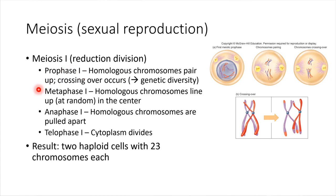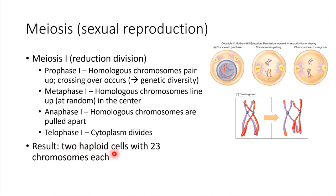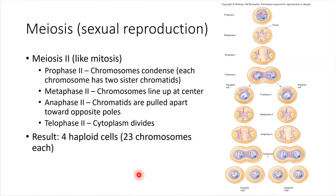Next we go through metaphase one, where homologous chromosomes line up at the center. In anaphase one, those homologous chromosomes are pulled apart. In telophase one, the cytoplasm divides — similar in overall concept to mitosis. The end result of meiosis one is a reduction division: the cells are now haploid, having just one unique copy of each chromosome. The chromosomes are still duplicated though, so there are two sister chromatids in each of these haploid cells. This is just the end of meiosis one.